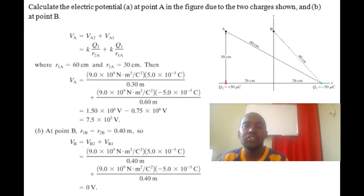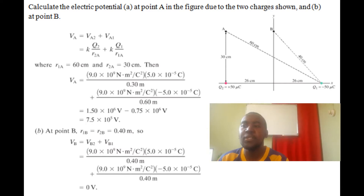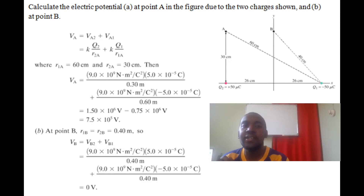At point B, the distances from q1 and q2 are split equally — if B to q1 is 40 centimeters, then B to q2 is also 40 centimeters. The charges have the same magnitude but different signs, so adding the same number plus its negative gives zero volts.